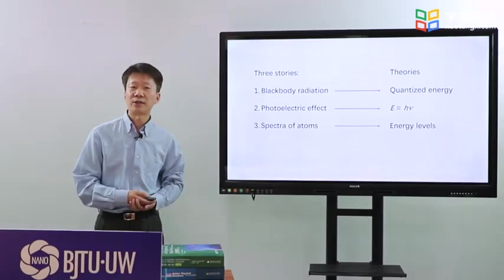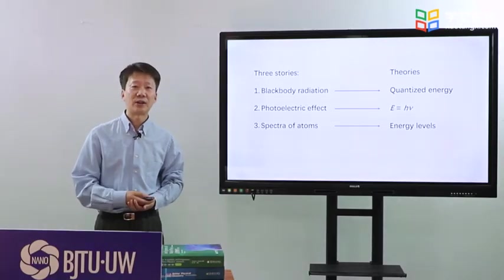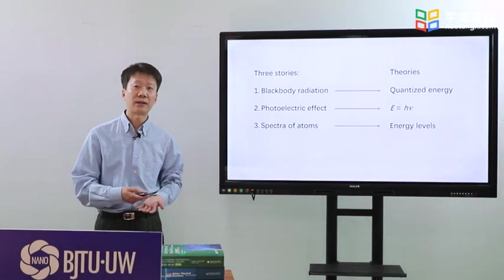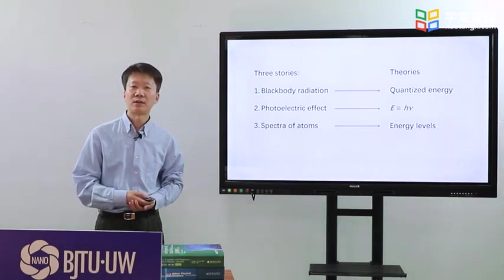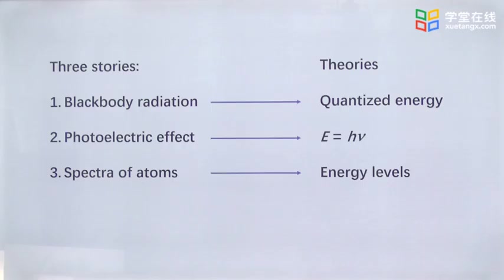The three stories tell us that energy absorbed or released from an atom is quantized. And energy is described by E equals H nu. H is a Planck constant. Nu is the frequency of the radiation. An atom has the quantized energy levels.